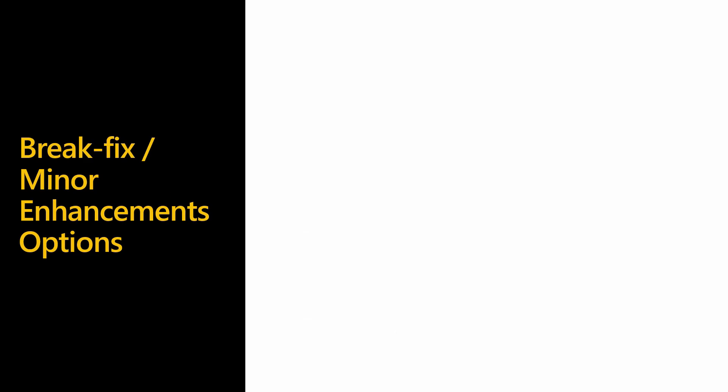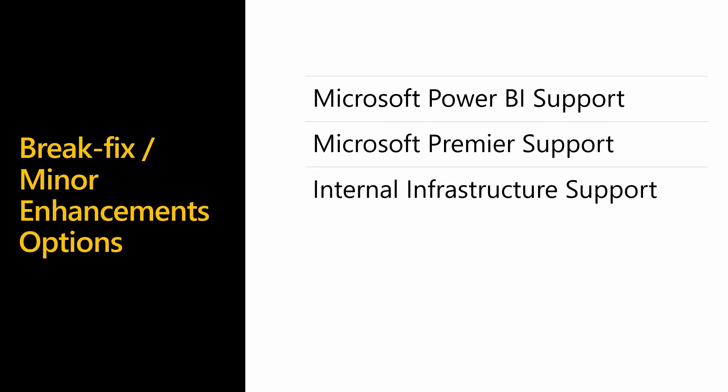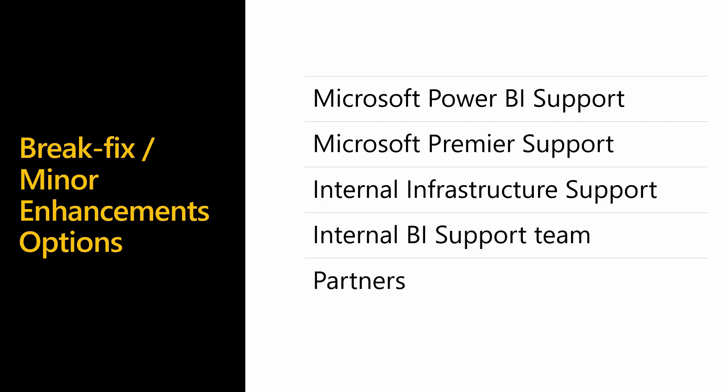When thinking about break-fix or minor enhancement support, there are various options depending on the organization's existing support structure. Power BI is a software-as-a-service solution, so any issues with the service need to be redirected to Microsoft. Microsoft has a support website where major disruptions are listed on the landing page. If it's not a known issue, a support case should be raised with Microsoft — all Power BI Pro users can do this, although the IT support team would ideally raise the case to avoid duplication of effort. If the organization has a premier support agreement, a premier support ticket can be raised under better SLAs. If the issue is with the organization's infrastructure — like gateways or back-end servers — the internal infrastructure team can provide support. If the issue is specific to a project, the internal BI support team or a support partner can help resolve it.